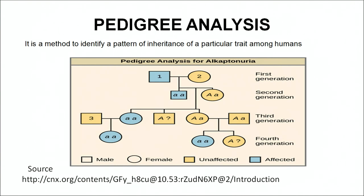Through pedigree analysis, the genetic counsellor can always suggest what the chances are of an individual who is a carrier or affected by a disease bearing a normal child. Through pedigree analysis we can find out whether the child to be born will be normal or affected. With this we have covered genetic engineering, DNA fingerprinting, pedigree analysis and genetic counselling. You must have enjoyed this chapter. Thank you.